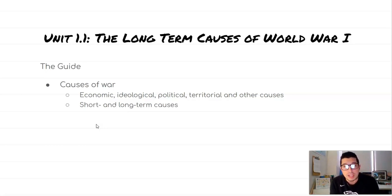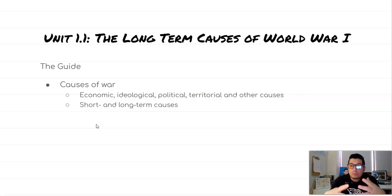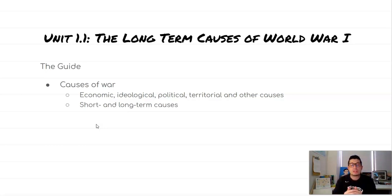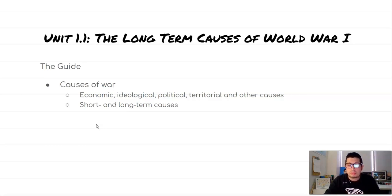Let's start with the guide. The guide says causes of war: economic, ideological, political, territorial, and other causes. As you're listening to this, keep those words in your head — which of the things I'm talking about has an economic base, an ideological base, political, territorial, and so on. The other part of the guide covers the difference between short- and long-term causes. Usually that question has you compare two wars — compare the short-term causes of World War I and World War II, the long-term causes, or compare and contrast both. Those are the questions that are really going to come up.